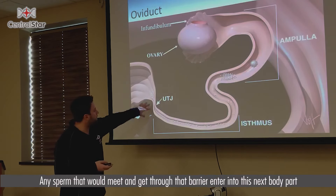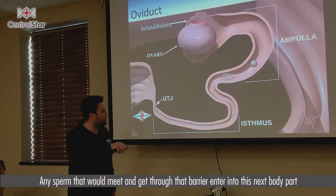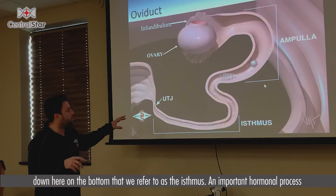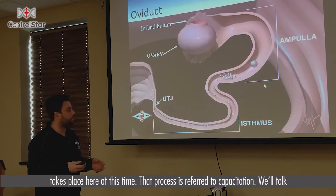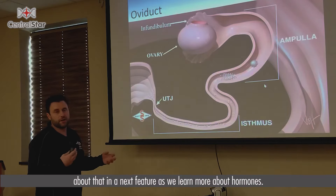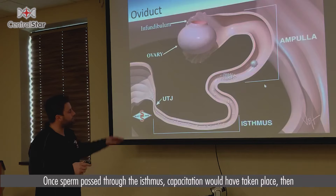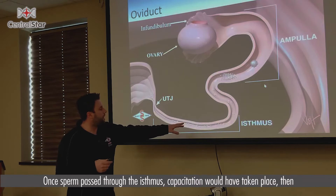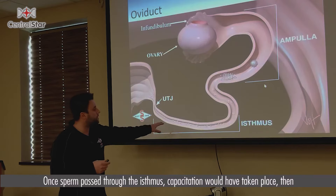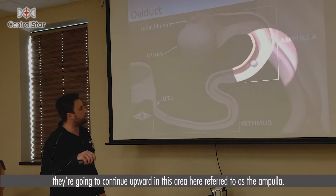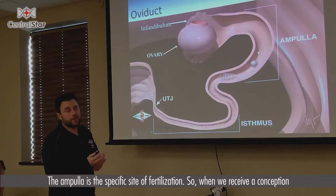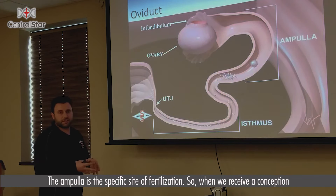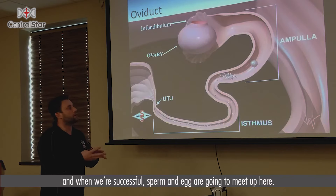Any sperm that get through that barrier then enter into the next body part referred to as the isthmus. An important hormonal process takes place here called capacitation — we'll talk about that in a future segment as we learn more about hormones. Once sperm pass through the isthmus and capacitation has taken place, they continue upward into the area referred to as the ampulla. The ampulla is the specific site of fertilization — when we're successful, sperm and egg are going to meet up here.